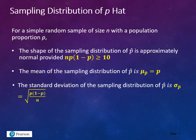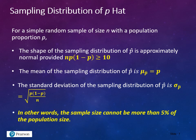p is the population proportion, all over n. Basically, what this is saying is the sample size cannot be more than 5% of the population size without somehow skewing the data.